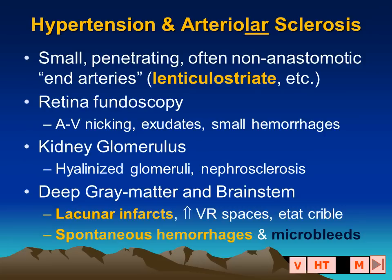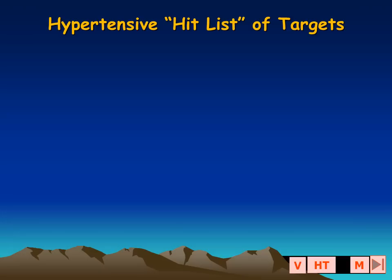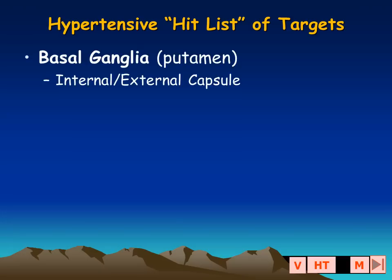Additionally, spontaneous hemorrhage as seen in this case, and the presence of deep microscopic hemorrhages or microbleeds, are also manifestations of hypertensive small vessel disease in the brain.